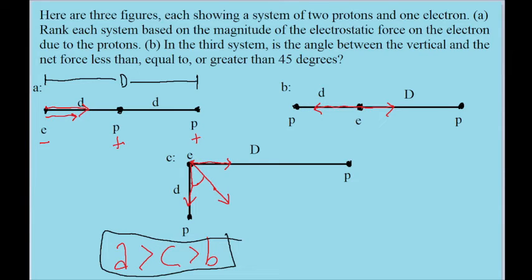Using what we know about vector addition, the only way for this angle to be 45 degrees is if both the horizontal component and the vertical component of the force are equal to one another, because 45 degrees is right in the middle of a 90 degree angle. So we'll know how this angle compares to 45 degrees just from knowing which force is stronger — whether the electron is experiencing a stronger force from the proton below it or the proton to the right of it.